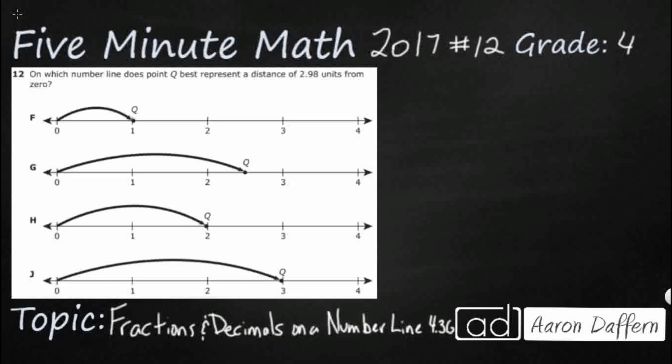So we have four different number lines here. They all go from 0 to 4 and we need to find on which number line Q best represents 2.98 or 2 and 98 hundredths units from zero. So really we want to just go ahead and understand where that is in relation to our whole numbers because we don't have any decimals on our number lines here. So let's build that number right here.